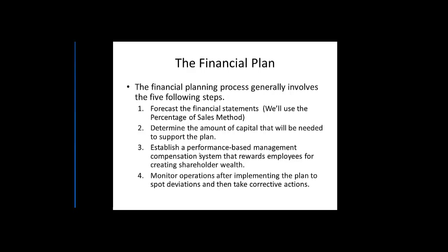The financial planning process generally involves five steps. First, we forecast the financial statements using the percentage of sales method — this deviates from the textbook approach. Second, determine the amount of capital needed to support the plan. Third, establish a performance-based management compensation system that rewards employees for creating shareholder wealth — we'll cover that later. Fourth, monitor operations after implementing the plan to spot deviations and take corrective actions.